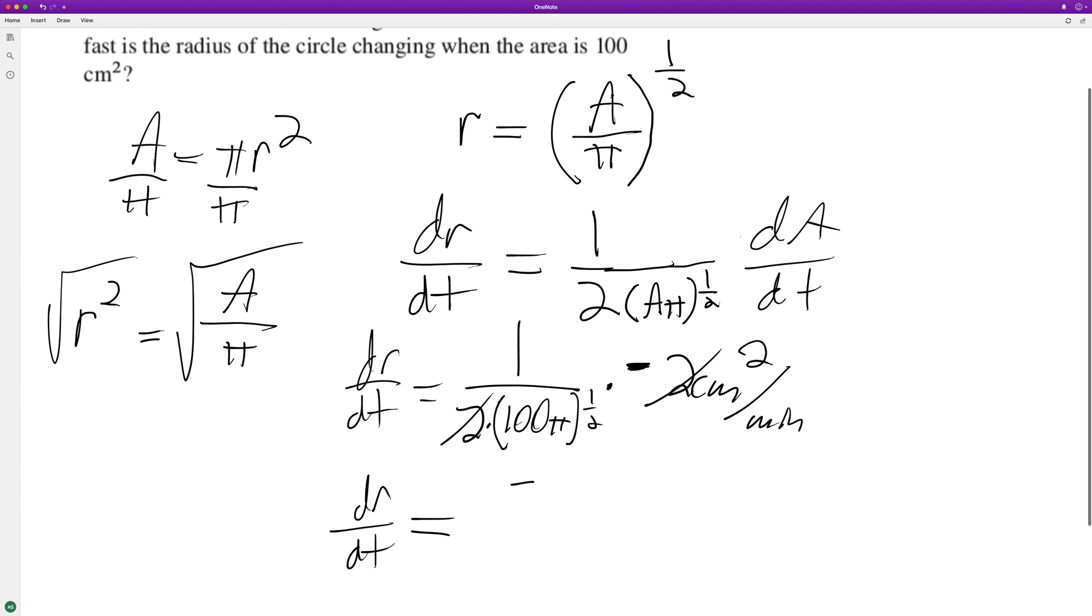We're left with negative one over - we can pull the 100, square root of 100 - and then we have the square root of pi, because pi raised to the one-half is the same thing as square root. Currently the radius is changing at negative one over ten square root of pi centimeters per minute.